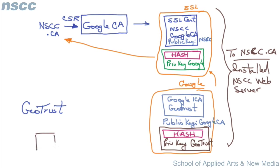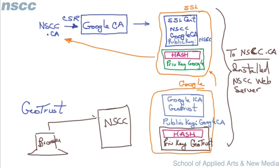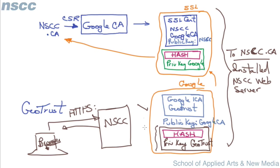When a browser hits the NSCC website and requests an HTTPS encrypted communication path, both certificates get sent back to the browser. The very first thing that happens is the browser looks at the ICA certificate. Because this browser has the certificates for all root CAs, and GeoTrust is a root CA, it has GeoTrust's public key in its keychain. So it can decrypt the hash and verify that the Google intermediate certificate is trusted by the root certificate.